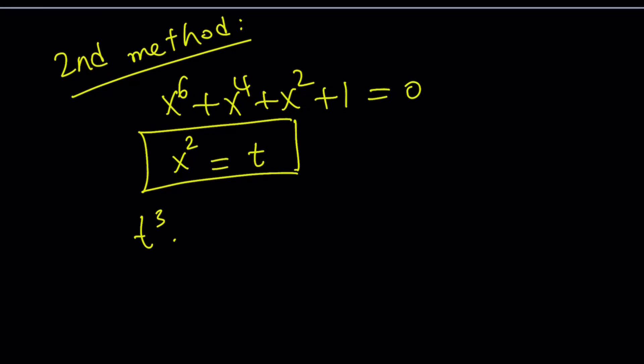So from here, we get the following: t^3 + t^2 + t + 1 = 0. Now, at this point, again, you can do the factoring and so on. But there is also another way to do it.